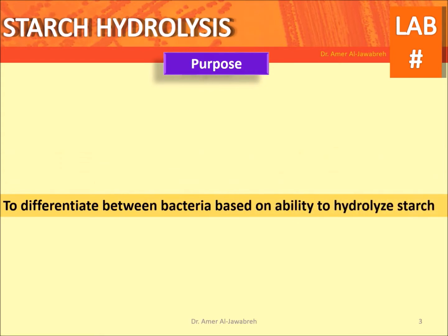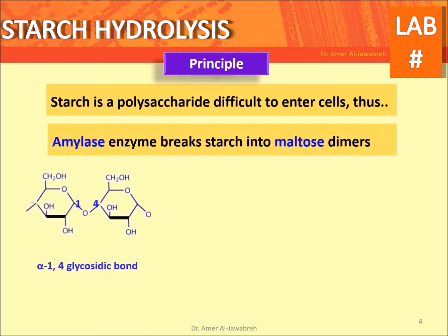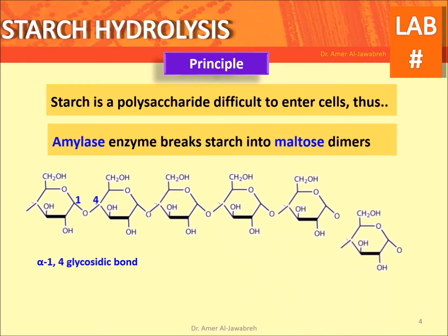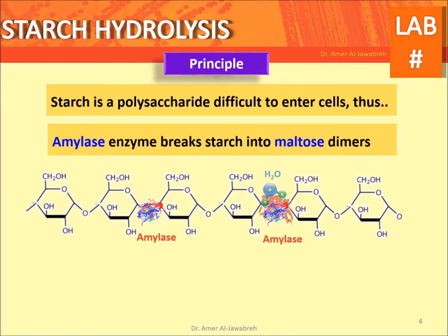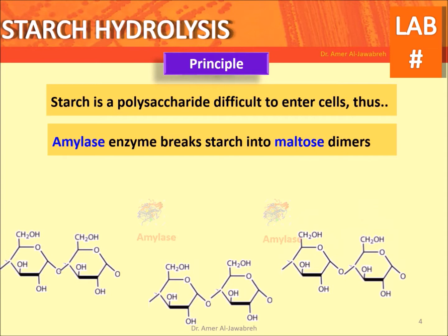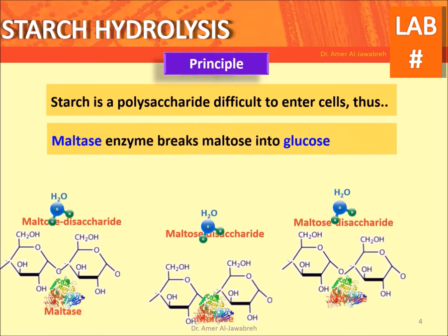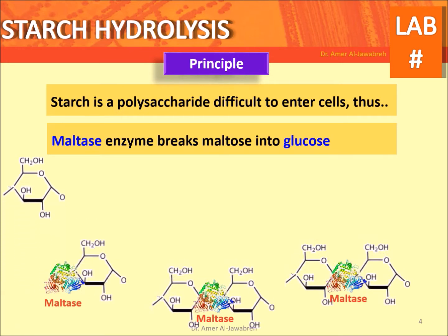Purpose: to differentiate between bacteria based on their ability to hydrolyze starch. Principle: starch is a polysaccharide that is difficult to enter cells. The amylase enzyme breaks starch into maltose dimers, then maltase enzyme breaks maltose into glucose to be transported into cells for glycolysis.